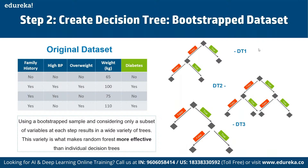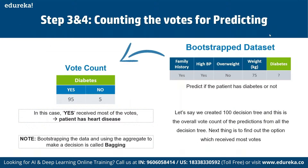In terms of how to use random forest, we use the bootstrap data set to predict whether a patient has diabetes or not. If we create 100 decision trees, we collect the overall count of predictions from all the trees. The next step is to find the option with the most votes — that becomes the final prediction.